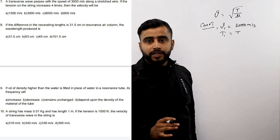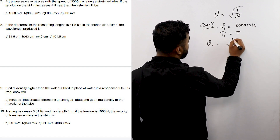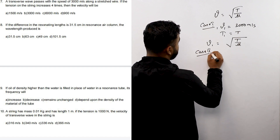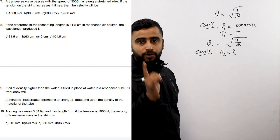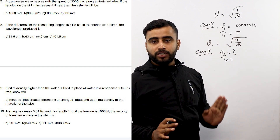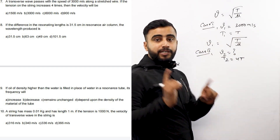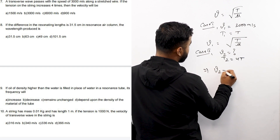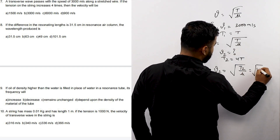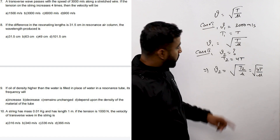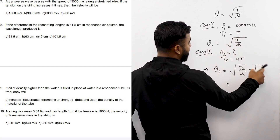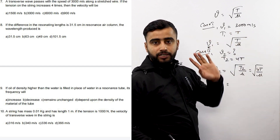Question number 7: Suppose tension T equals T, then V1 equals root over T by mu. In case 2, if tension equals 4T, then V2 equals root over 4T by mu, which gives root over T by mu multiplied by 2, equal to 3000 meters per second.